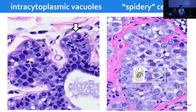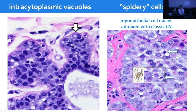Another thing I look for are the myoepithelial cell nuclei that are always found mixed with classic lobular neoplasia. They look hyperchromatic, with a little comma or apostrophe shape. These help confirm that you're truly dealing with classic lobular neoplasia.